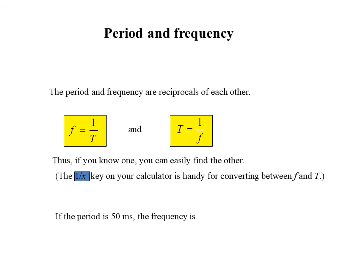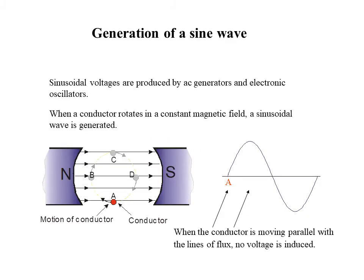The 1/x key on your calculator is handy for converting between f and T. If the period is 50 microseconds, then the frequency is 0.02 megahertz, or equivalently 20 kilohertz.